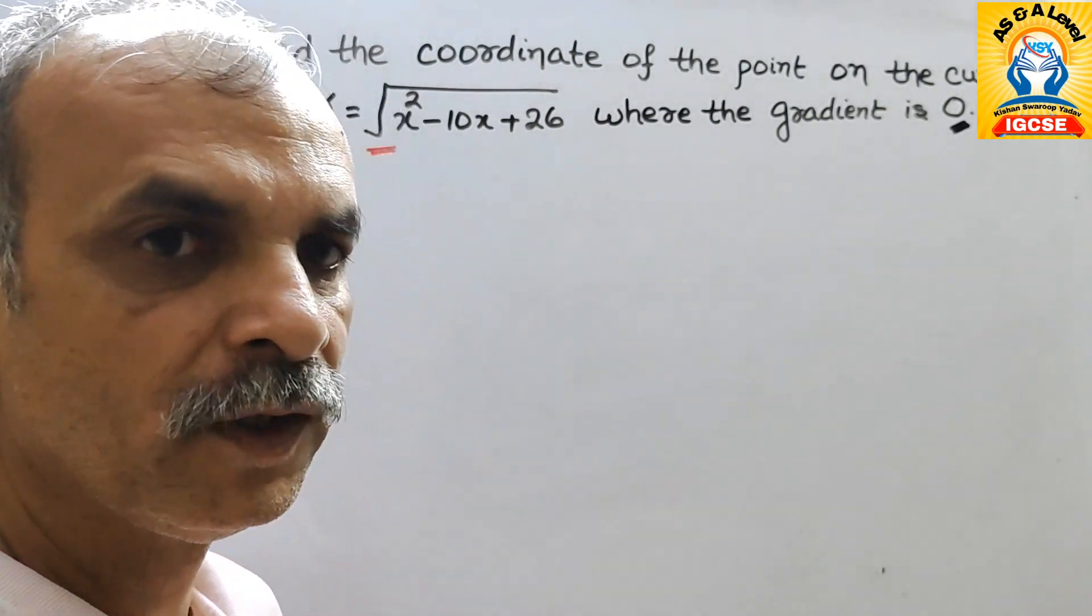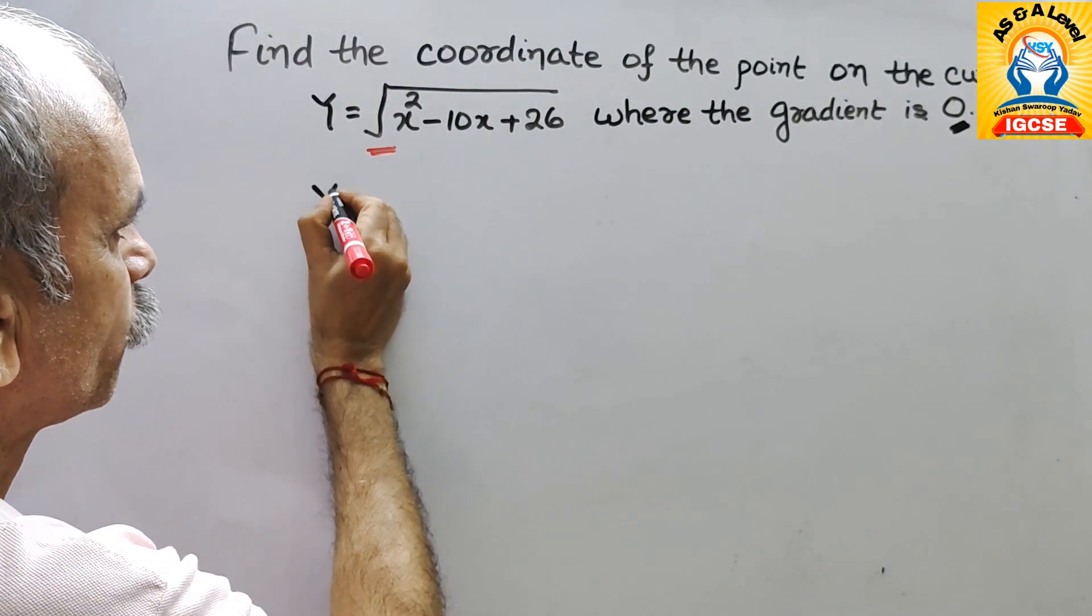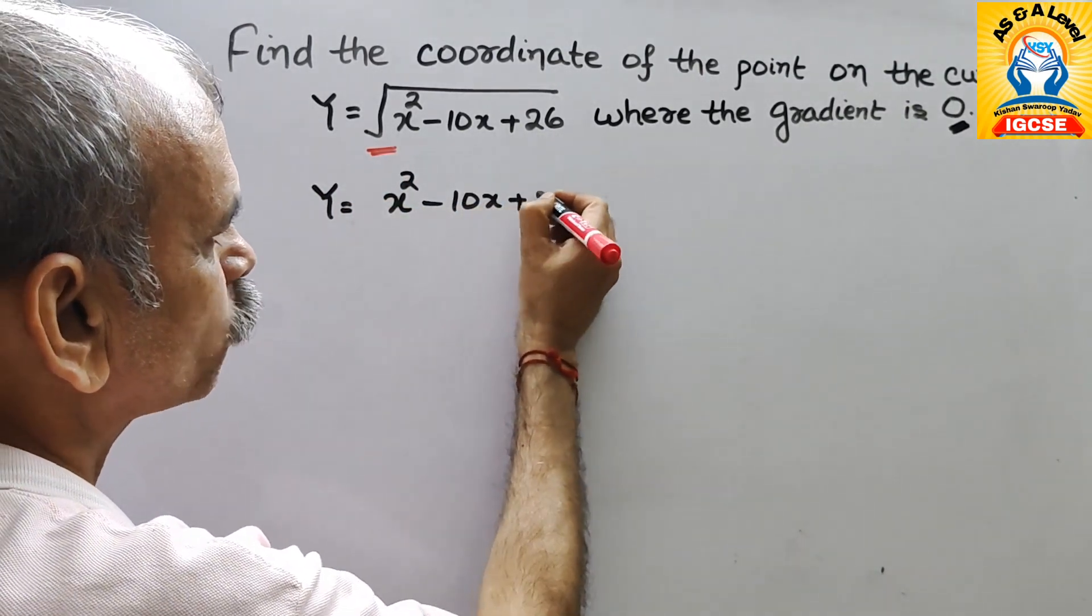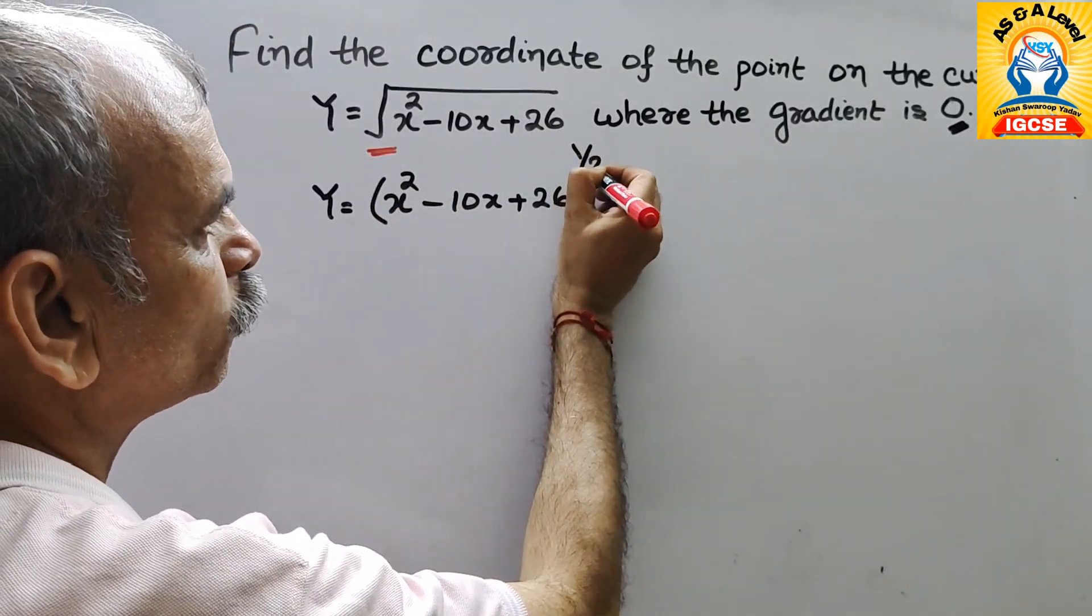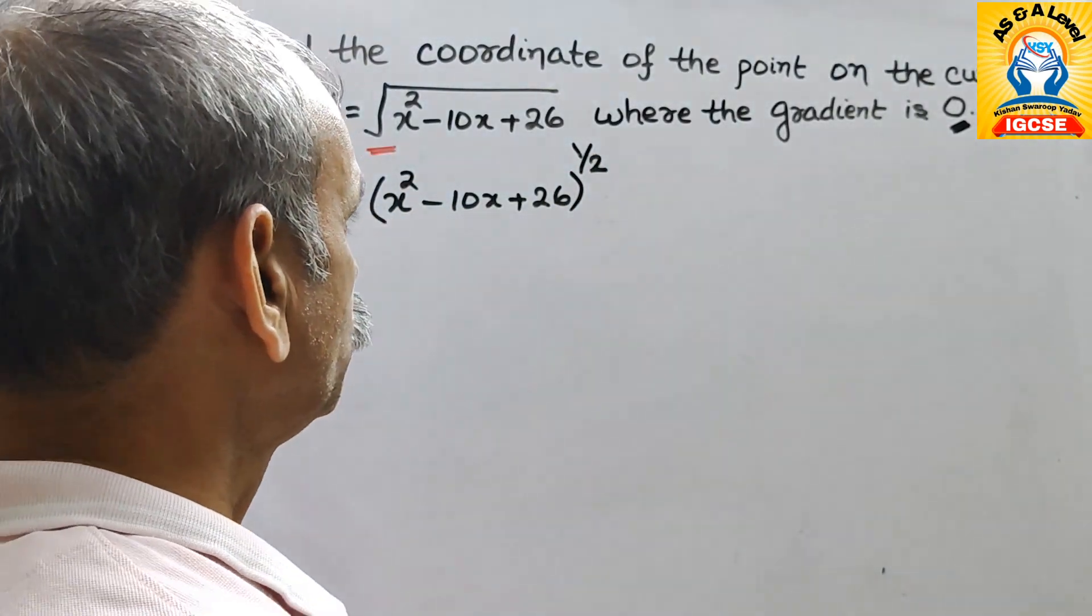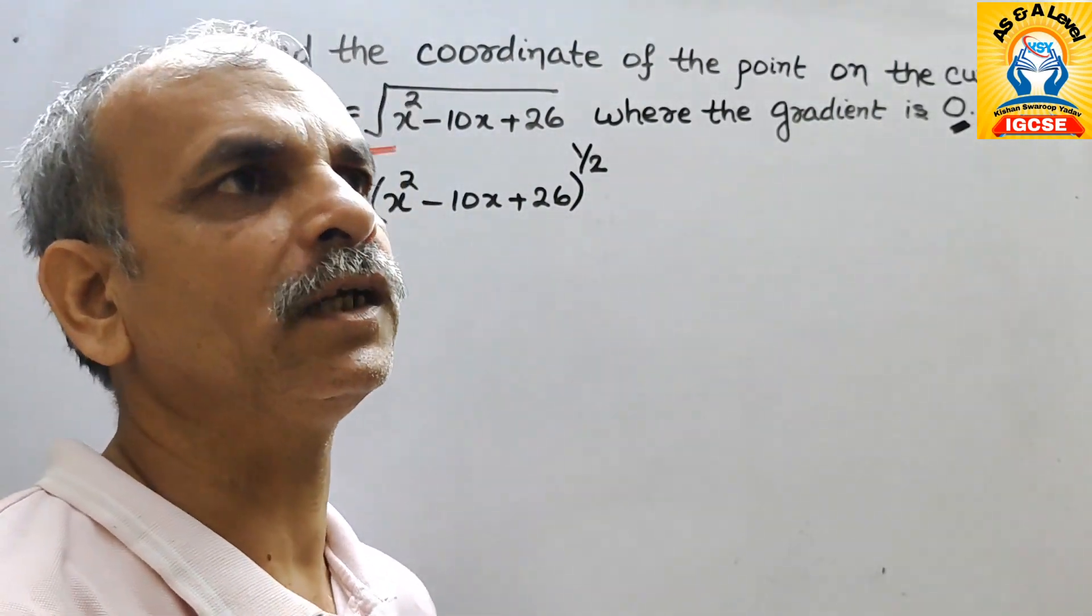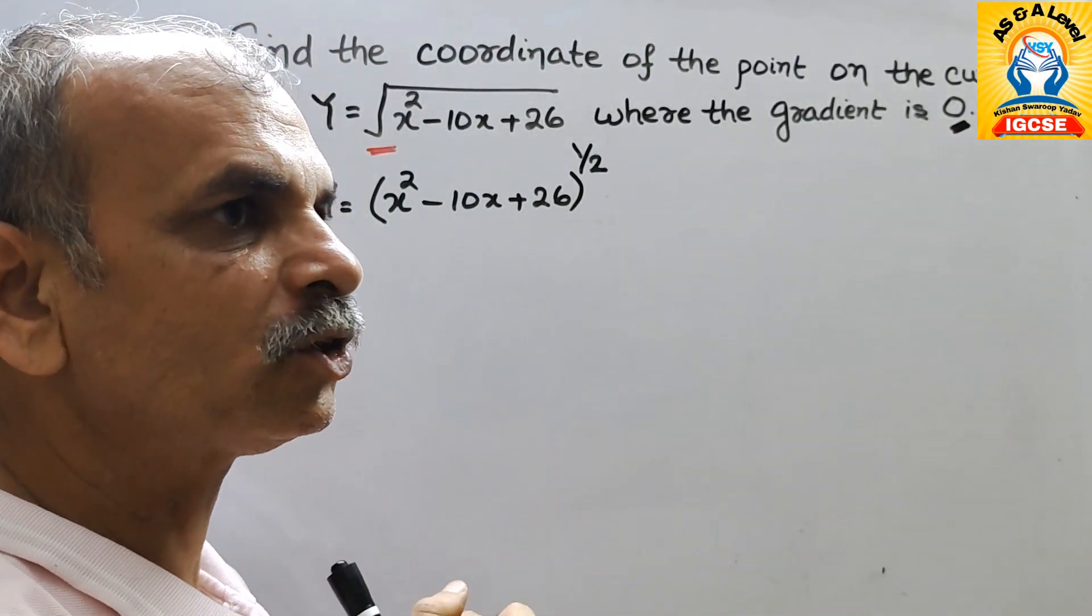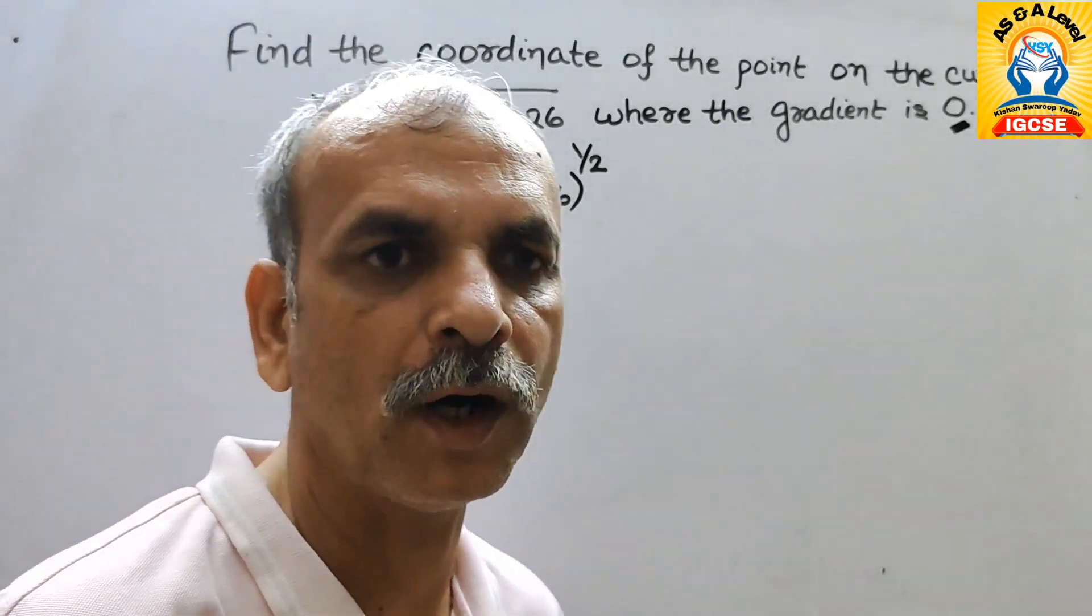Now this we can rewrite it like this. y is equal to x squared minus 10x plus 26 and the power is 1 by 2. 26 and 13 minus 2 is 11. So we can't be able to go for middle term also.